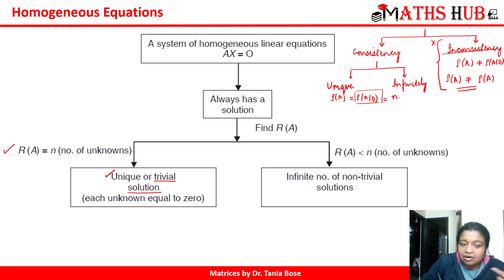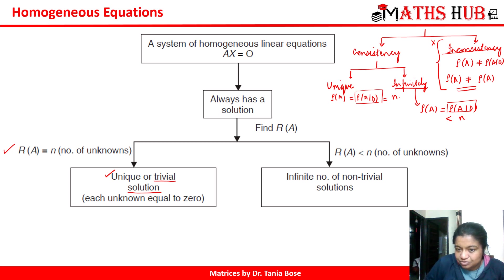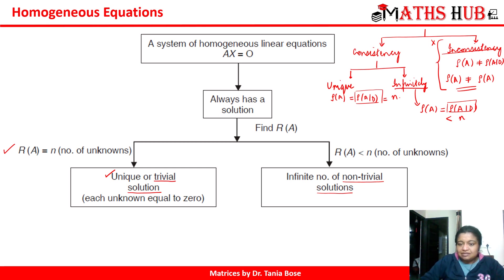When rank of A equals rank of [A|D] but is less than the number of unknowns, we get infinitely many solutions. In a homogeneous system, this case gives the condition that rank of A is less than the number of unknowns, and it is called a non-trivial solution — meaning infinitely many solutions. So you can see how from a non-homogeneous system of equations we reduce the conditions to obtain the homogeneous case.